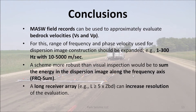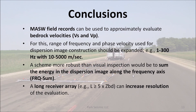In conclusion, MASW field records can be used to approximately evaluate bedrock velocities in both P and S waves. All you have to do is prepare dispersion images with much broader ranges in frequency and phase velocity than those used in normal MASW analysis. The recommended frequency range is from 1 to 300 Hz, and the recommended phase velocity range is from 10 to 5,000 m per second. A simple frequency summation scheme can more objectively evaluate BS and BP of bedrock. A long receiver array at least 5 times longer than bedrock depth will be the key to increase the effectiveness of the proposed approach.